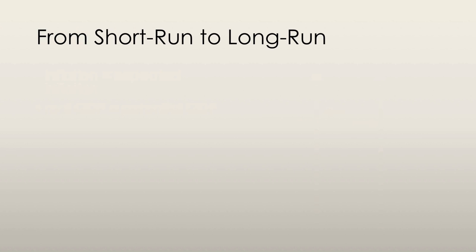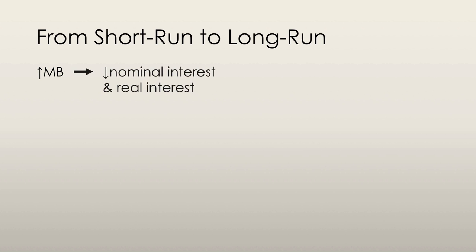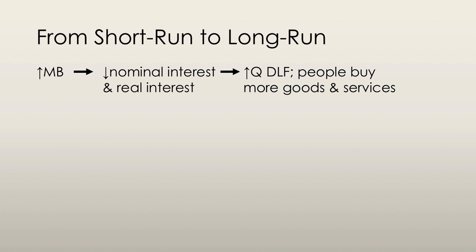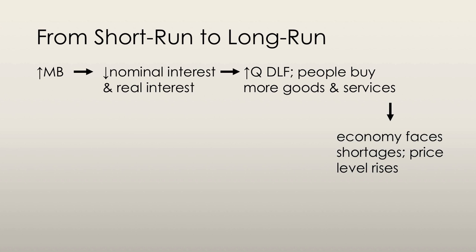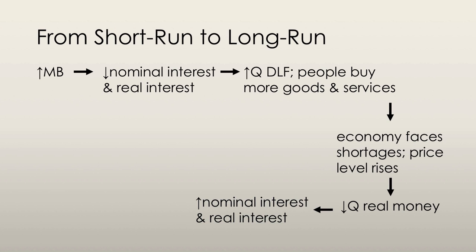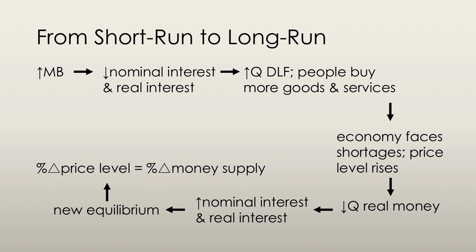Going from short-run to long-run equilibrium is a complicated process. If the central bank increases the quantity of money, the nominal and real interest rate will fall. This lower interest rate increases the demand for loanable funds because people want to buy more goods and services. However, the economy is unable to meet this demand, so there are shortages, which cause the price level to rise. As the price level rises, there is a decrease in the quantity of real money, causing the real and nominal interest rates to rise. At the new equilibrium, the price level has risen by the same percentage as the increase in the money supply, and that is when the money market will have reached long-run equilibrium.